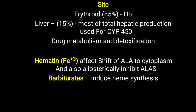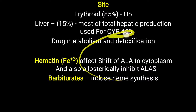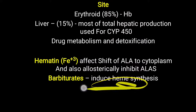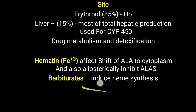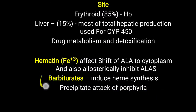Another important drug to remember is barbiturate. When barbiturate is given, it induces drug metabolism, which induces cytochrome P450 formation, and therefore induces heme formation. If a person is suffering from porphyria, this drug can precipitate an attack. So if a person has porphyria but is currently stable and suddenly barbiturate is given, it will induce an attack of porphyria.